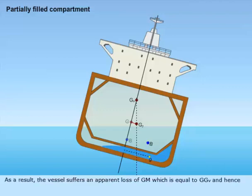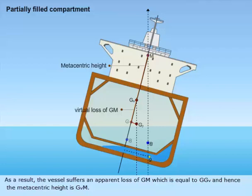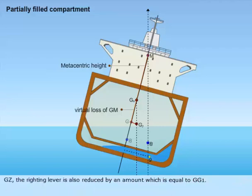As a result, the vessel suffers an apparent loss of GM which is equal to GG1, and hence the metacentric height is G1M. The righting lever is also reduced by an amount which is equal to GG1.